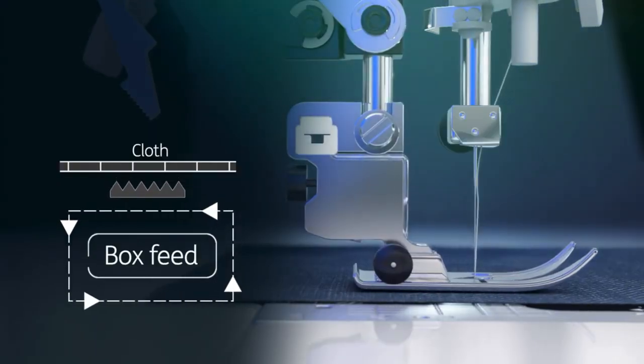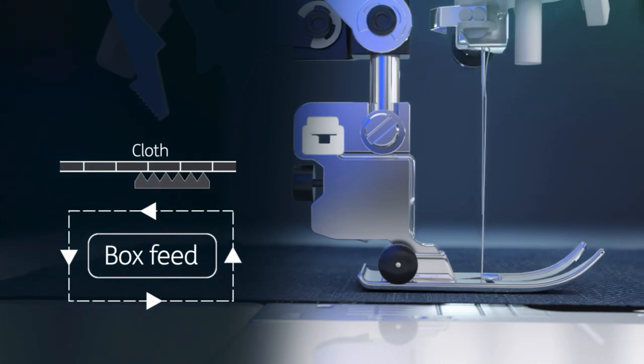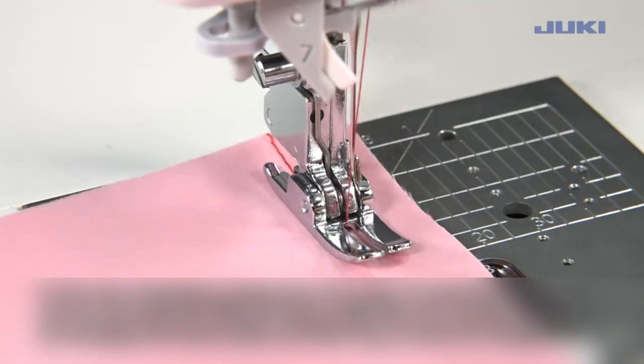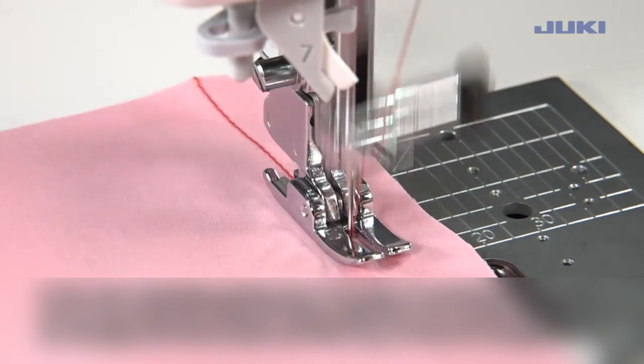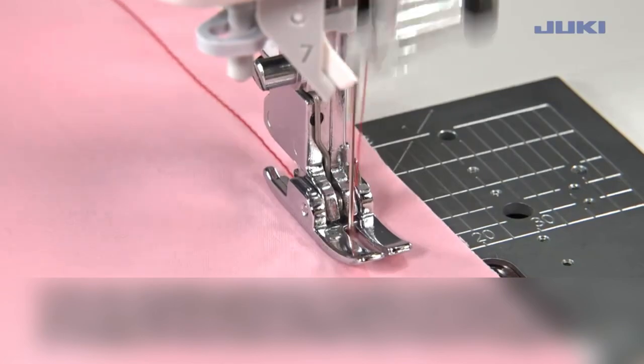First up, let's talk about the box feed system. Unlike the conventional oval movement, the feed dog performs a rectangular motion, maintaining longer contact with the fabric. This means no more fabric deformations or slippage, even when working with heavy or multi-layered fabrics.